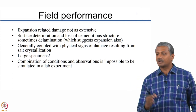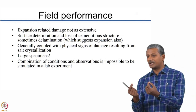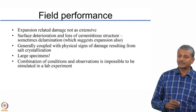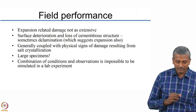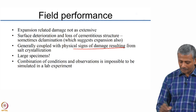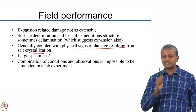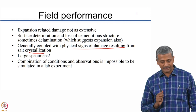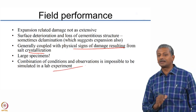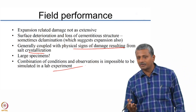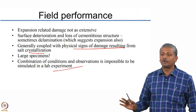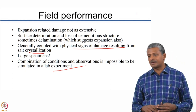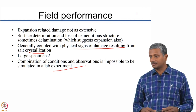In the field, expansion-related damage is not as extensive because a small expanding skin on the surface will not result in major cracking of the system. Surface deterioration, loss of cementitious structure, or delamination can actually happen, and generally coupled with physical signs of damage from salt crystallization due to large specimen size. The combination of conditions and observations seen in the field is impossible to simulate in the lab environment. However, we can come up with estimates by assessing how specimen size effects change the extent of expansion or deterioration.